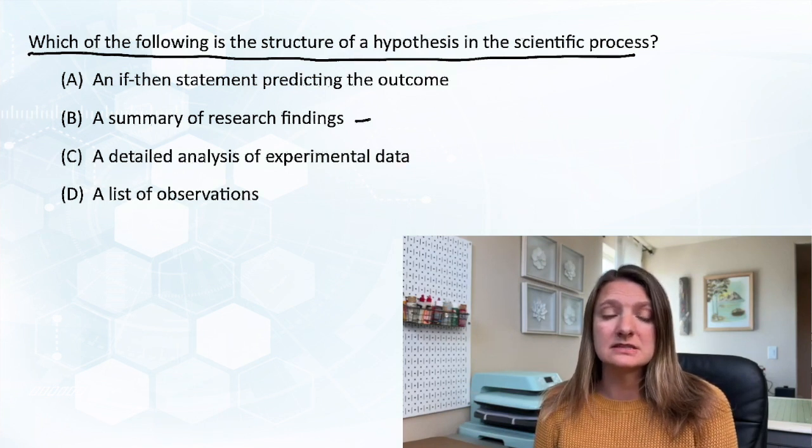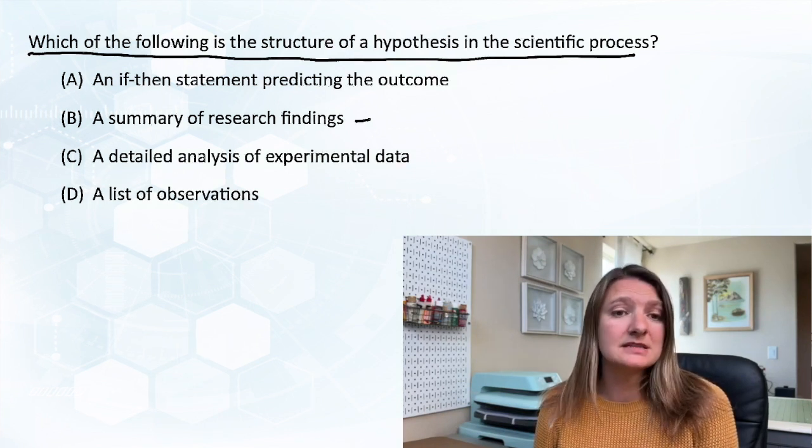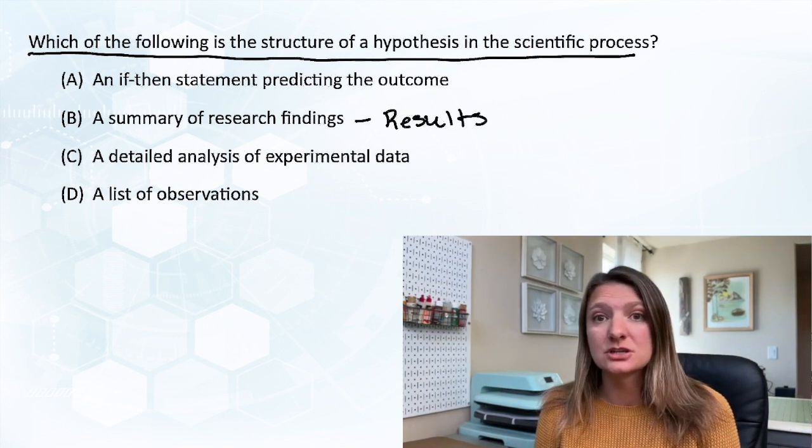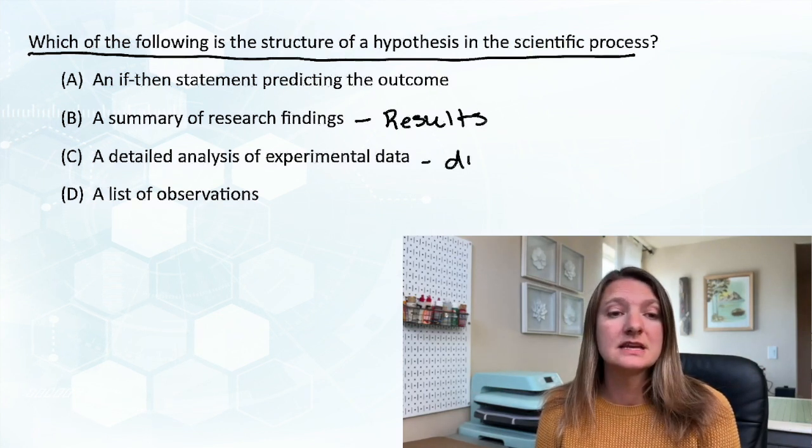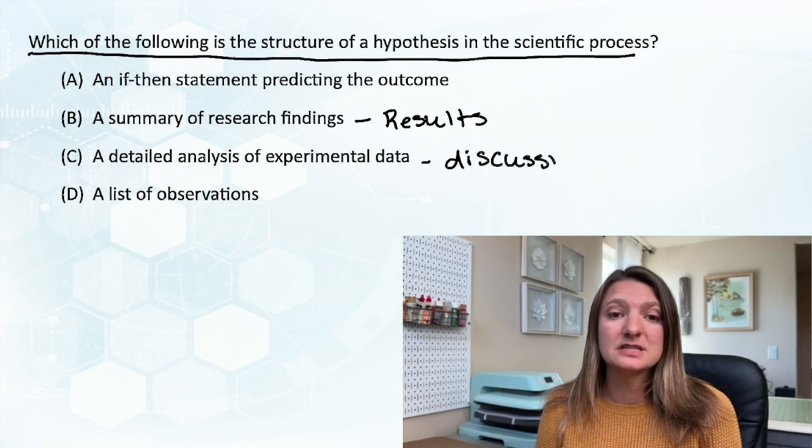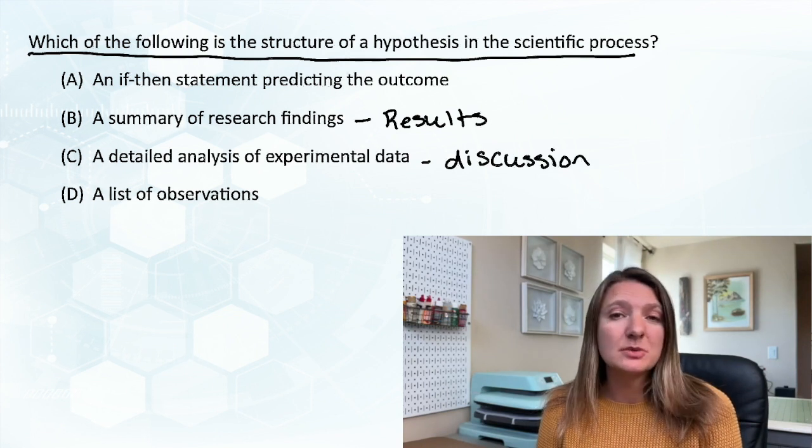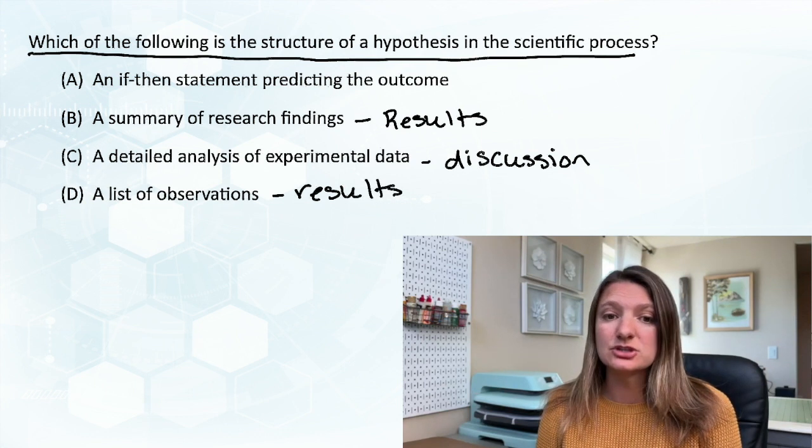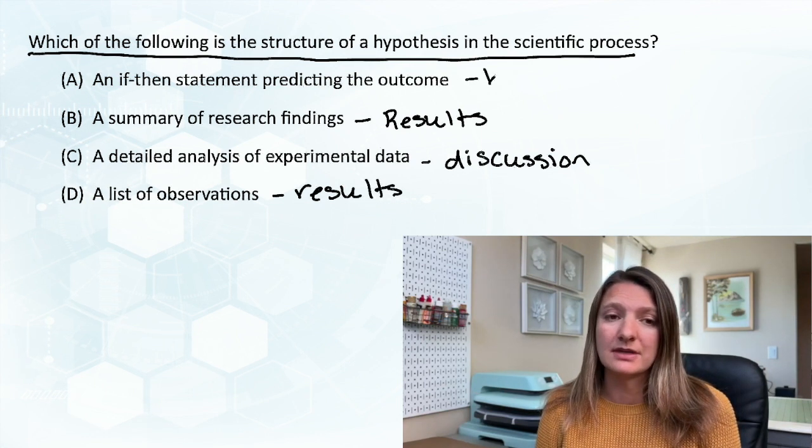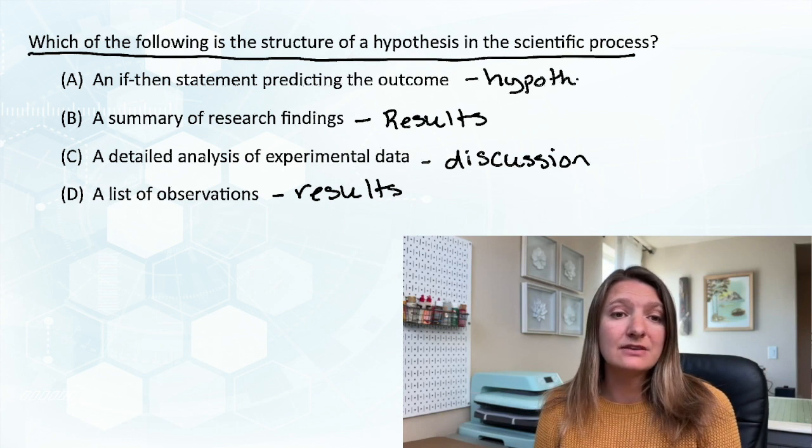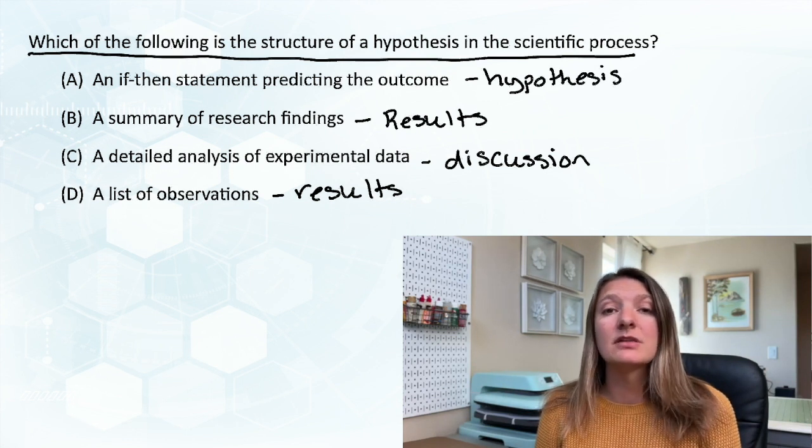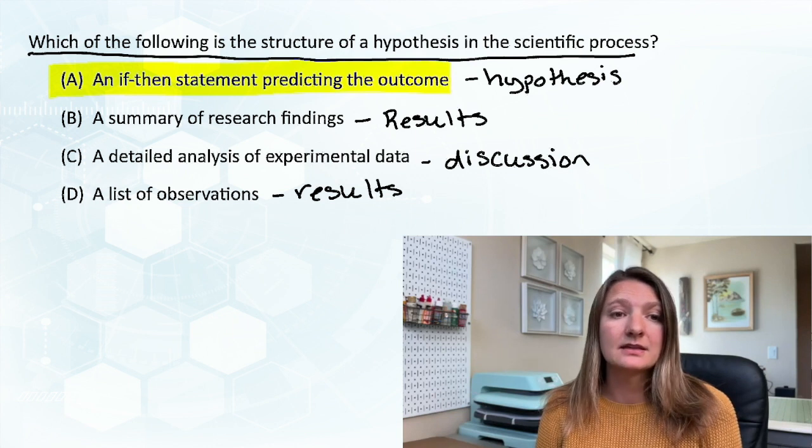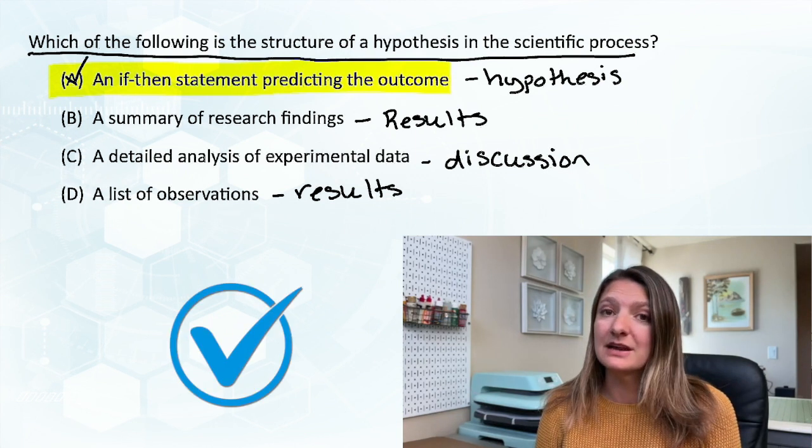So if you're looking at all of these, B - a summary of the research findings - should be in the results section. C, a detailed analysis of experimental data, should be in the discussion. D, a list of observations should also be in the results. A, an if-then statement predicting the outcome - this is what the hypothesis is. So our answer is A, an if-then statement predicting the outcome.